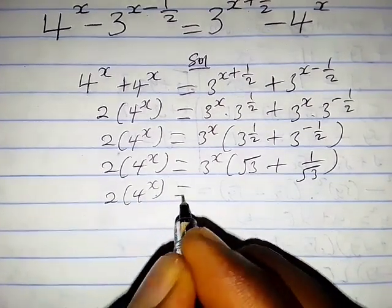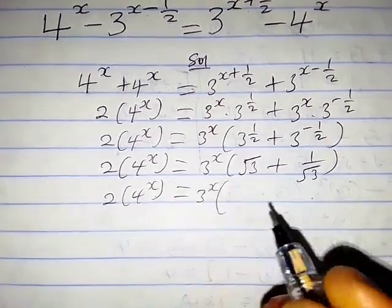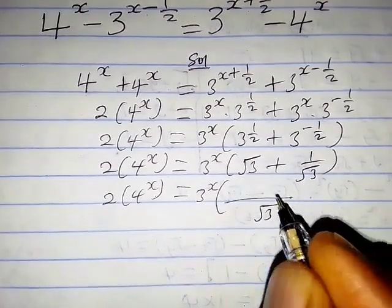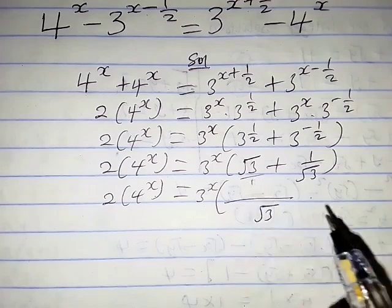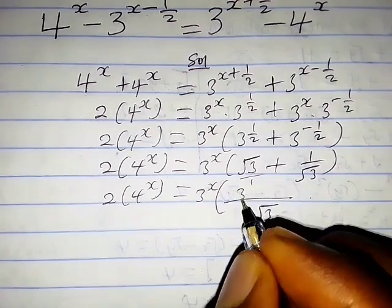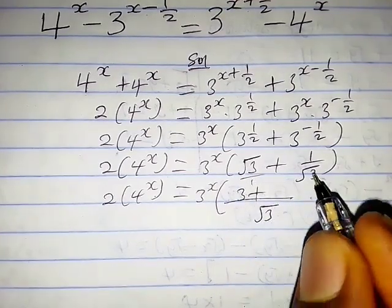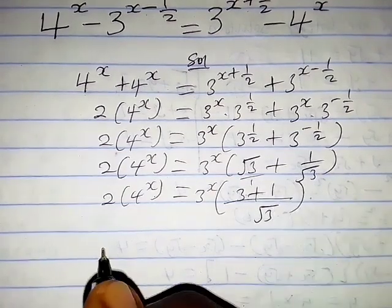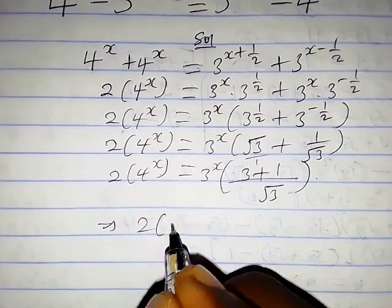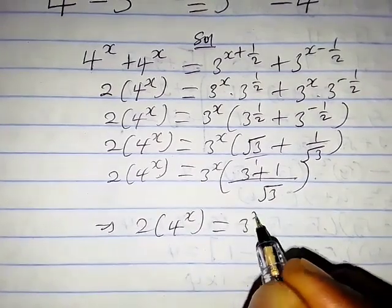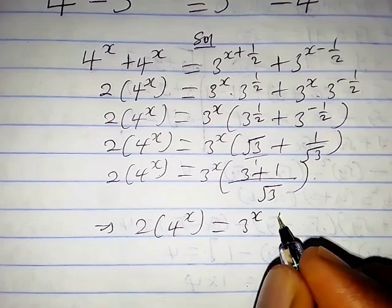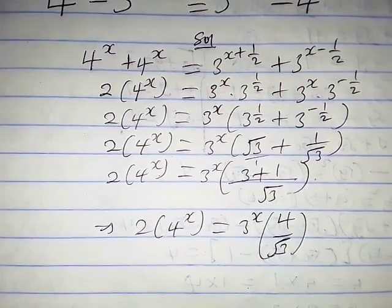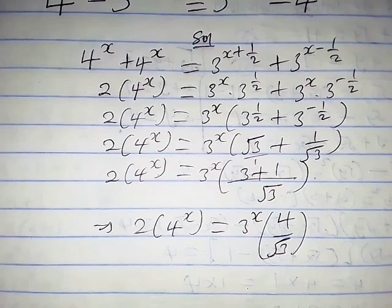So we have 2 times 4 raised to the power x equals 3 raised to the power x, times the quantity square root of 3 plus 1 over square root of 3. Multiplying through by square root of 3 over square root of 3 gives 1, so this implies 2 times 4 raised to the power x equals 3 raised to the power x times the quantity 3 plus 1, that is 4, over the square root of 3. Let's put this in brackets.